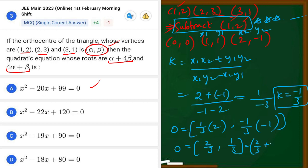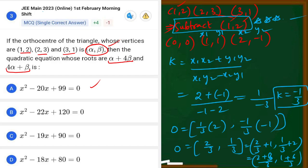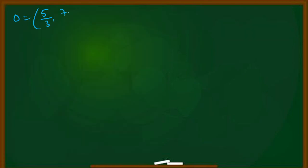Since we had subtracted (1, 2) earlier, we now add it back. So the final orthocentre = (2/3 + 1, 1/3 + 2) = (2/3 + 3/3, 1/3 + 6/3) = (5/3, 7/3). So the final orthocentre is (5/3, 7/3).